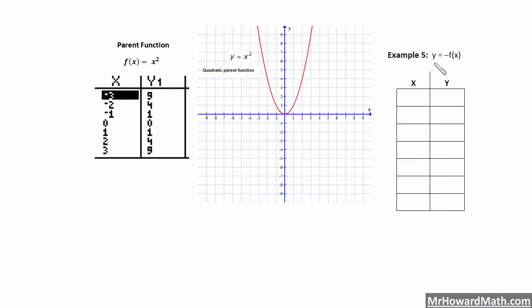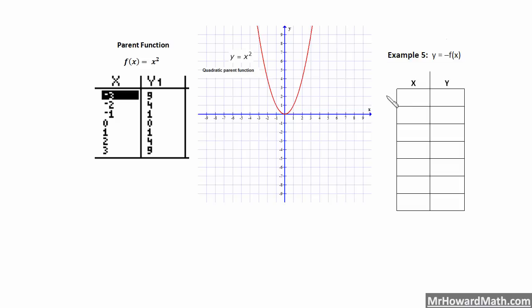Here we have example 5: y equals negative f of x. We are taking our original quadratic parent function, y equals x squared, and applying negative f of x. This is going to make a reflection over the x-axis because we can view f of x as our y values — so we are taking the opposite of all of our y values due to this negative sign. We are going to reflect those over the x-axis. Any positive y value now becomes negative, and our x values are not going to change.